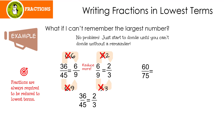Let's look at 60 over 75. When I think about 60, I always think about a 5 — 5 times 12. Does 5 go into 75? It sure does, 5 times 15. See, you don't have to find the largest number; you just need to start. I'm going to cancel out my common factors and I end up with 12 over 15.